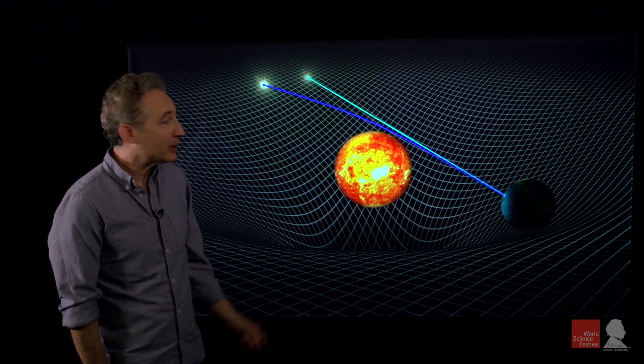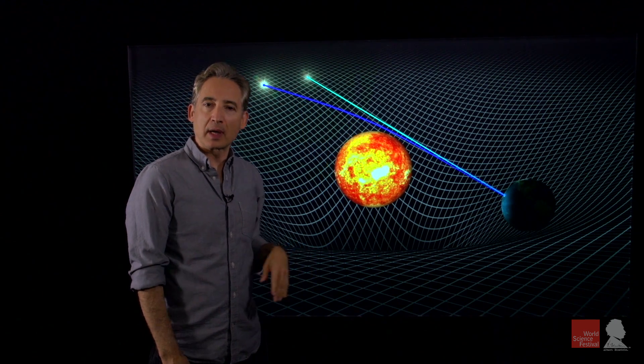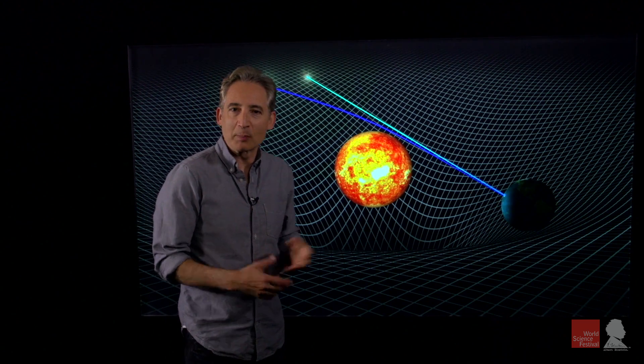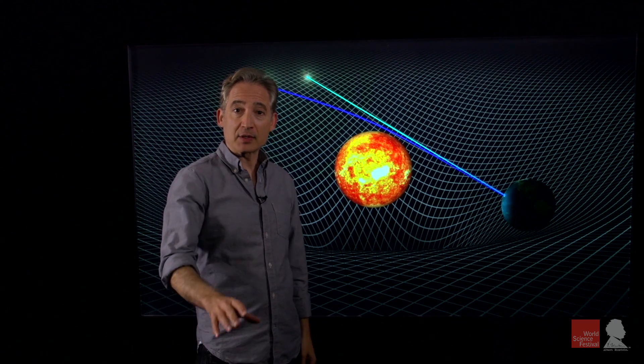Einstein was able to calculate the angular shift between these two locations. It's got a number, 1.7 arc seconds, that in principle could be tested by astronomical observations.